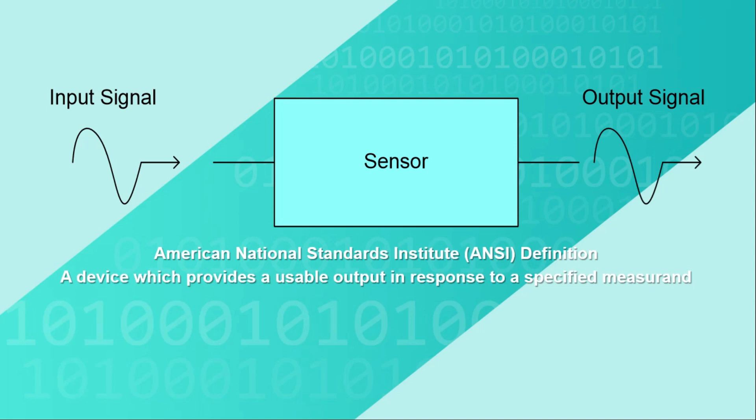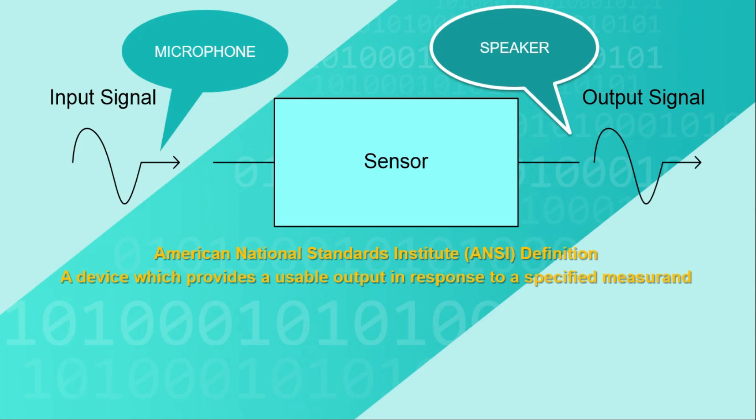This picture is in accordance to the American National Standards Institute. The definition says that this is a device which provides a usable output in response to a specified measurement. This will be your input signal, and then this is your sensor or the sensing element, and then this is the side where your output will come out. As I have given the example earlier, your input signal here will be the microphone, and what I have told you earlier, your sensor will be the amplifier, and then your output will be the speaker. Simple as that.